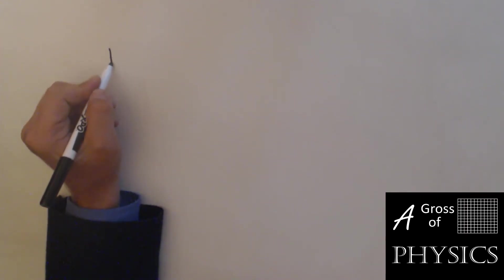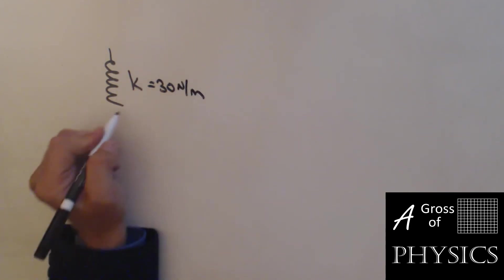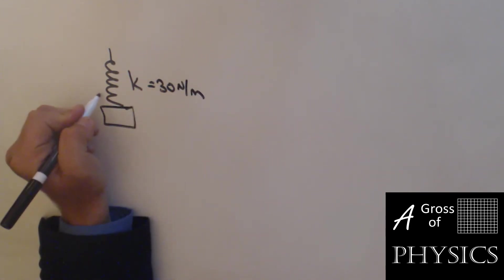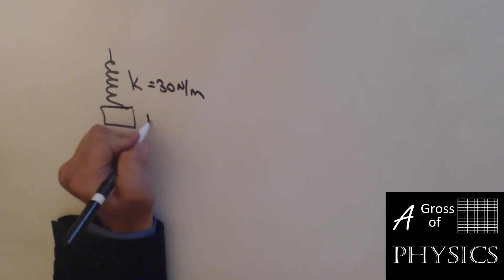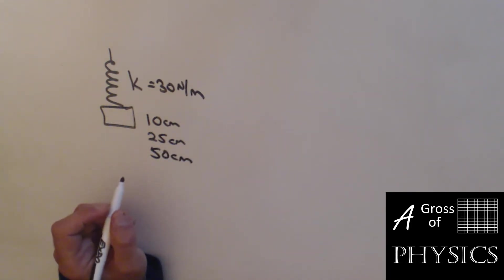For this next problem, we're going to look at a spring. We already know the spring's constant is 30 newtons per meter. And we're going to stretch it 10 centimeters, 25, and 50 centimeters. And what I want to do is find the amount of energy stored in the spring for each of these distances.